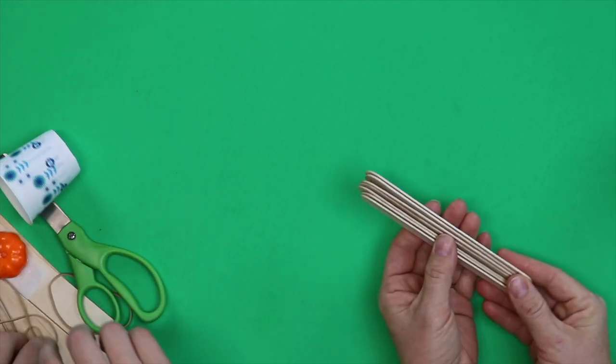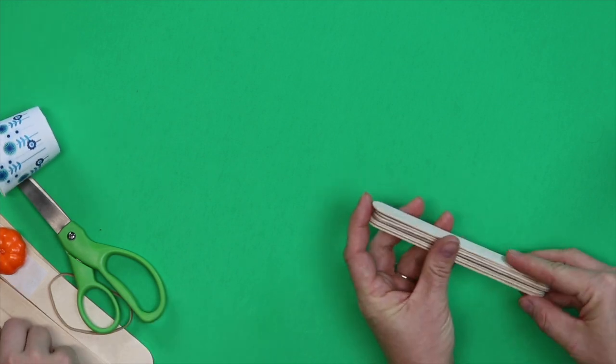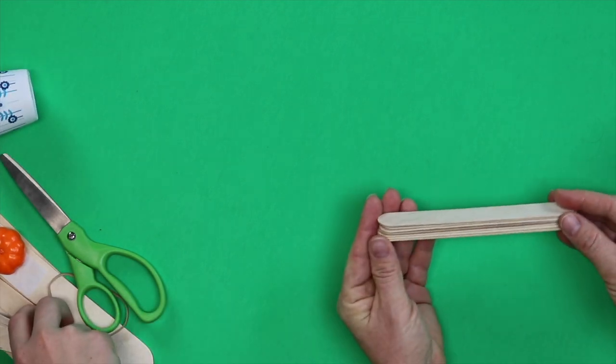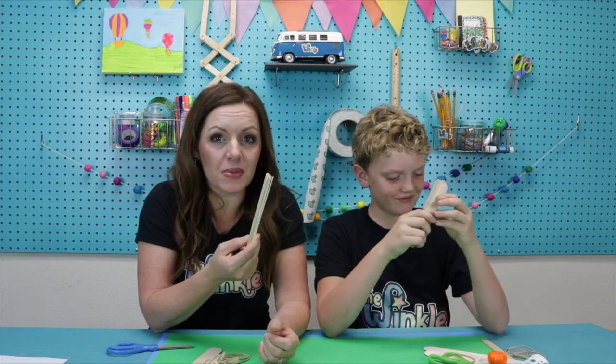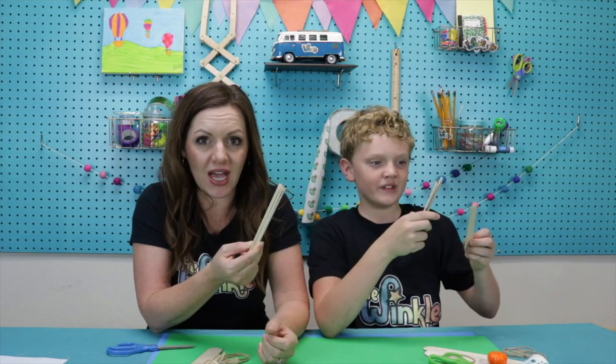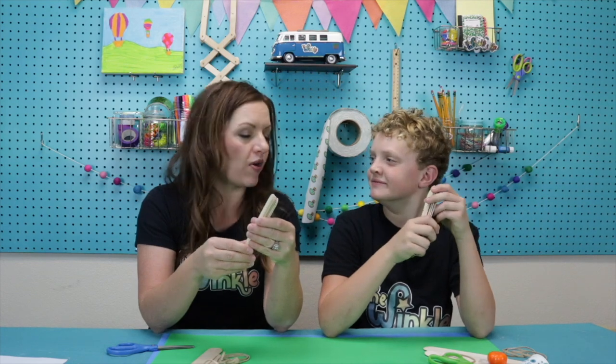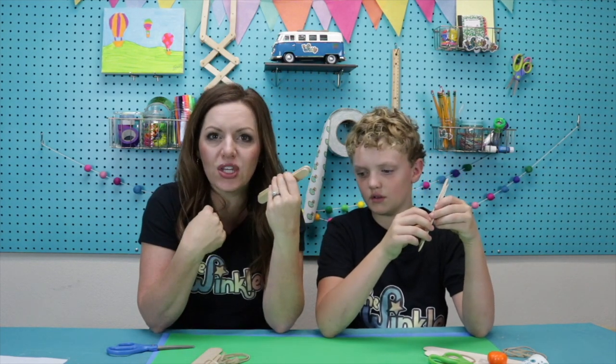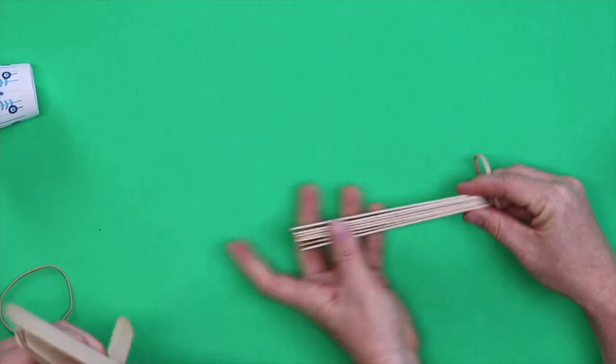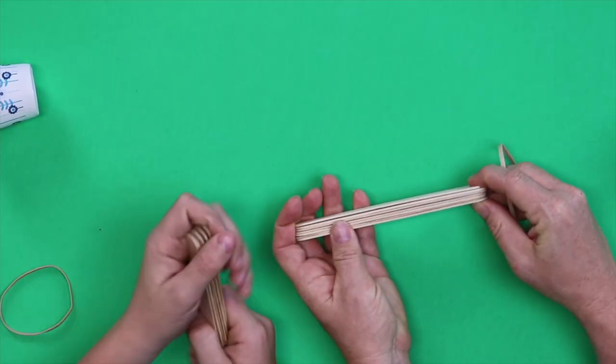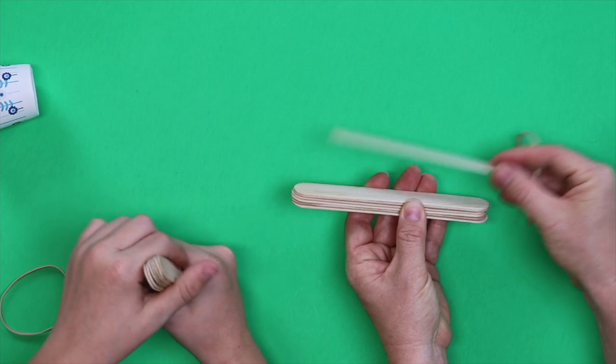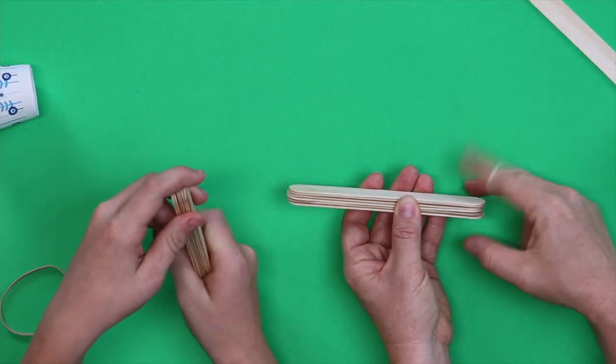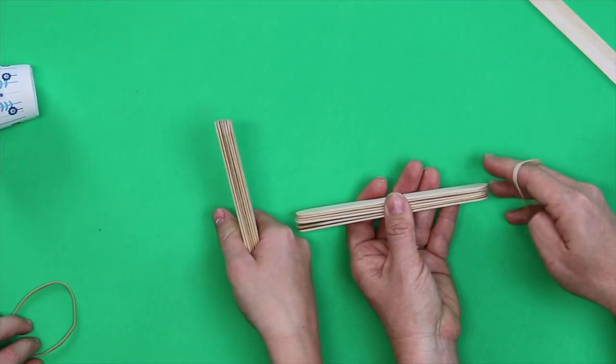Okay, first we're going to make the fulcrum of the catapult. So that's going to be with your large popsicle sticks. You're the engineer here, so you're going to be building this fulcrum as part of your catapult. You can decide if you're going to put five, six, seven of these sticks and what's going to make your catapult go farther. Okay, stack your popsicle sticks up on top of each other. I am going to use six. How many are you going to use? Seven. Okay, Grant's using seven.